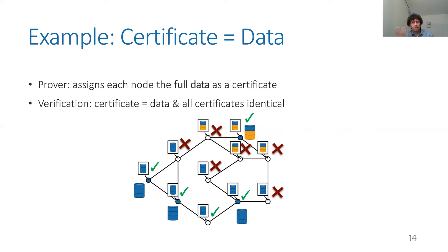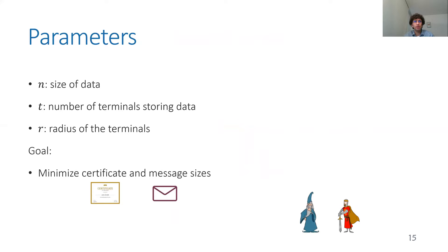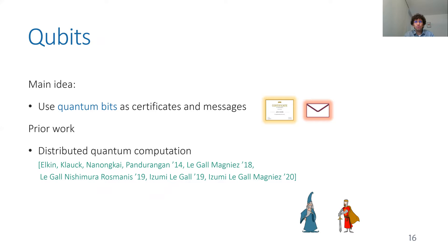This is a nice and simple example, but the certificates are huge — as big as the replicated data — which may be much larger than the network itself. The key parameter here is n, the size of data (as in communication complexity, not the network size), along with t, the number of terminals storing data, and r, the radius of the terminals — the largest distance between any two terminals. Our goal is to minimize both certificate size and message sizes.